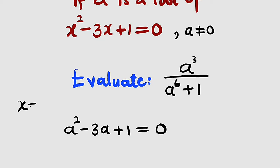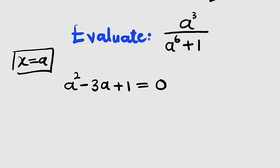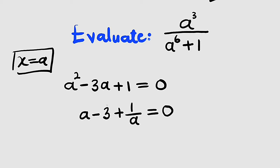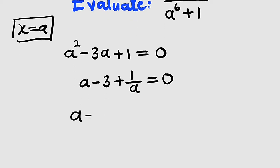From here, we can divide each term by a, since a is not equal to 0. If we do that, we have a squared divided by a, equal to a, minus 3a divided by a is 3, then plus 1 divided by a equal to 0. Taking the constant to the right hand side, we get a plus 1 divided by a equal to positive 3.